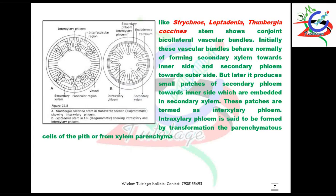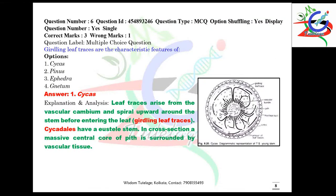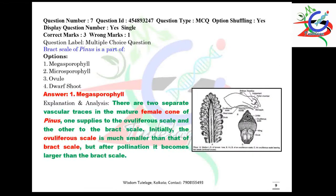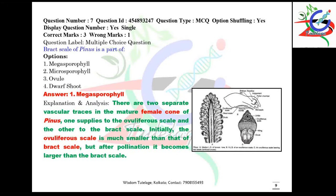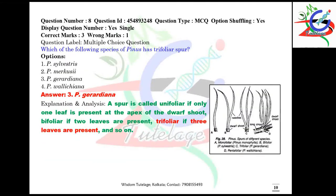Question number six: girdling leaf traces are the characteristic feature of which plant? The correct answer is Cycas. Images are also given here for your further reference. Question number seven: the bract scale of Pinus is a part of — it is nothing but the megasporophyll. The structure of the megasporophyll is given here.